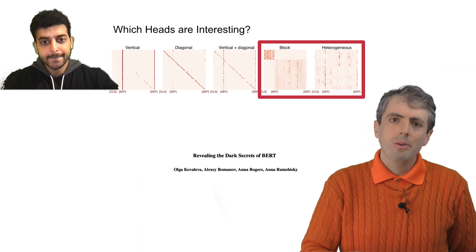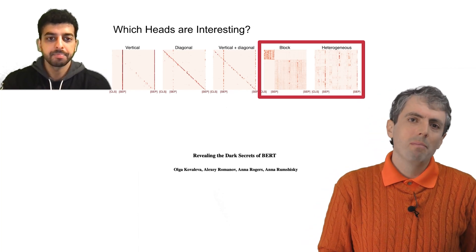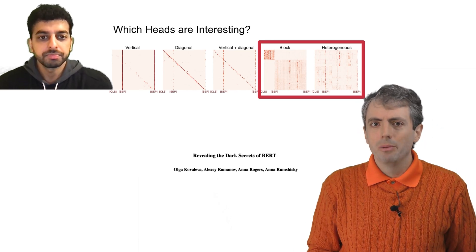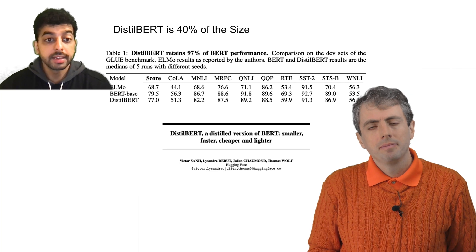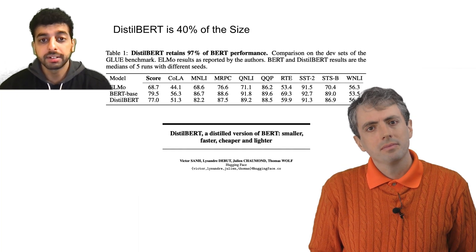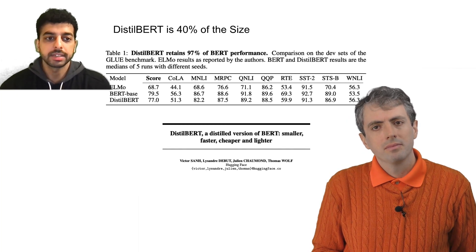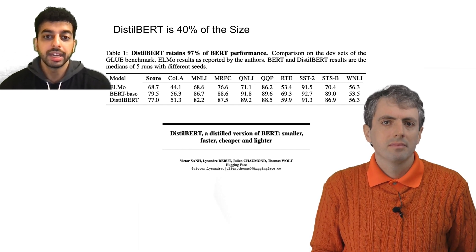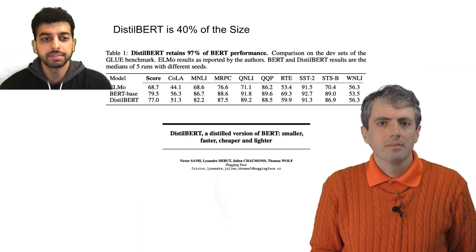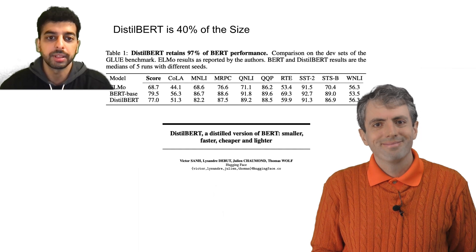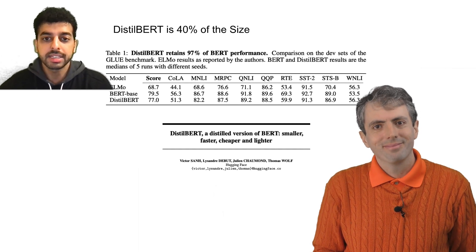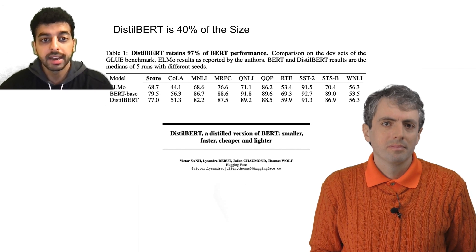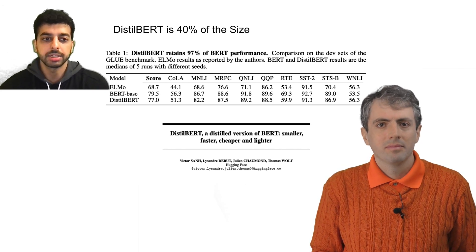So if many of the heads aren't doing much that's interesting, does BERT need to be so darn big to do well? No, and this connects to recent work about more generally understanding neural networks. You might have heard of HuggingFace, a company whose products make life infinitely easier for NLP researchers who want to work with large language models. Their distilled BERT is 40% smaller, 60% faster, but 97% as good as the original model.